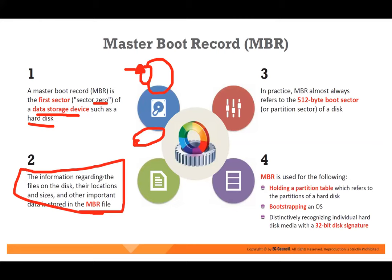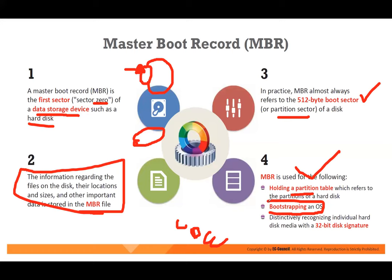You have multiple files — hundreds of files in your hard disk. The MBR tells you in which sector each file is stored and what the size is. MBR is almost always referred to as the boot sector or partition sector. It is used for: holding the partition table — for example, C partition, D, E partitions. It also holds the bootstrap — how do you start the operating system. The OS starting point is also stored in the MBR.